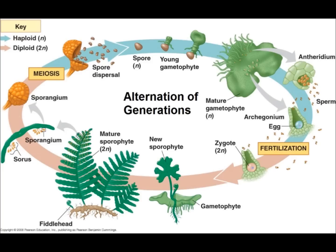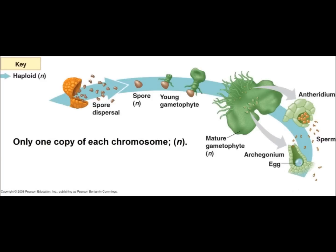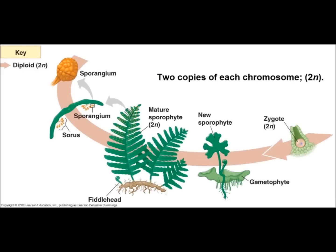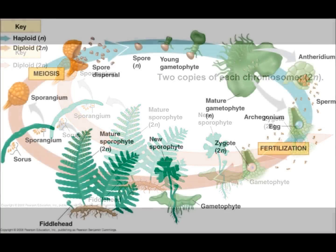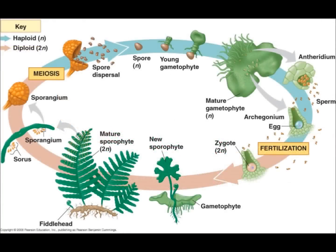This means that ferns, like many other plants, go through a multicellular haploid phase, where each of its cells contains only one copy of each chromosome, and a multicellular diploid phase, where each of its cells contains two copies of each chromosome. This is unlike humans in the fact that we live our entire lives as diploid structures.